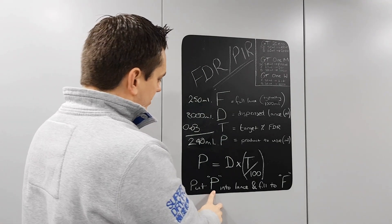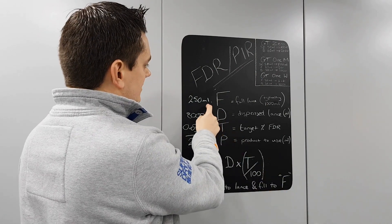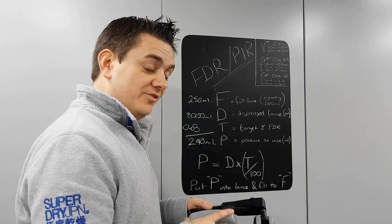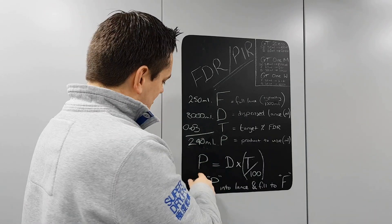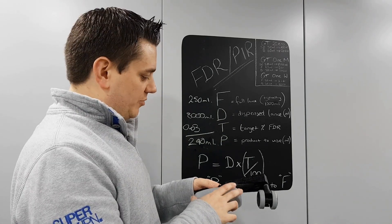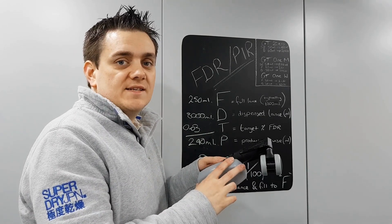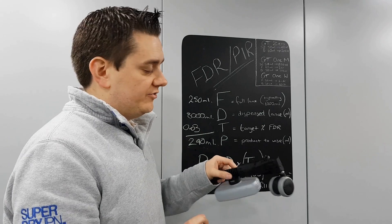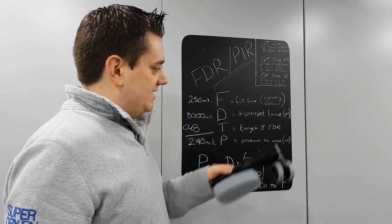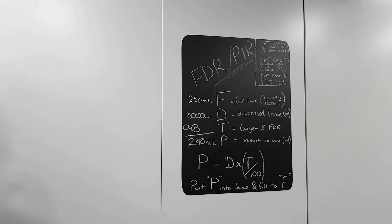One, we've got to put P into the lance and fill it to F with water. So we're only going to be putting 10 mils of water into this with 240 mil of neat product. That tells us that this is operating at pretty much capacity at three percent FDR out of that nozzle. You will not get any more than three percent out of one of these. You will out of one of these, there'll be a lot more coming through.